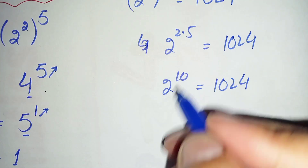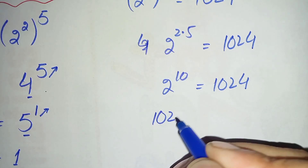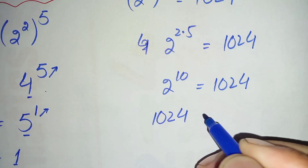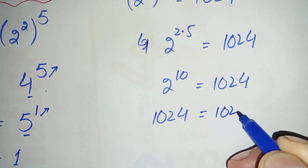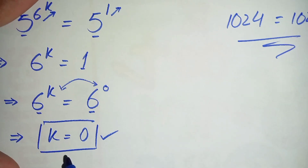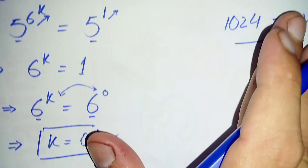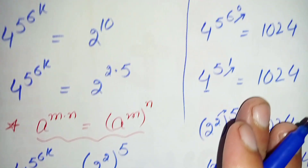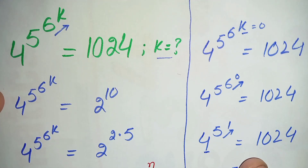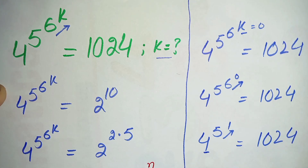The value of 2 raised to power 10 is 1024, so 1024 equals 1024. Since both sides are equal, k equals 0 is the exact and correct value of k in this exponential equation. If you like this video, don't forget to subscribe to my YouTube channel. Thanks for watching.